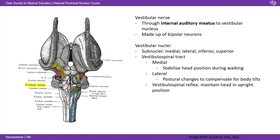The semicircular canals and otolith organs send signals via the vestibulocochlear nerve — one of the cranial nerves — through the internal auditory meatus to the vestibular nucleus. These are bipolar neurons transmitting this. The vestibular nuclei have four sub-nuclei: medial, lateral, inferior, and superior, and they all send outputs via the vestibulospinal tract.